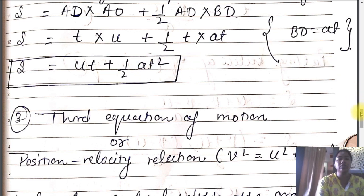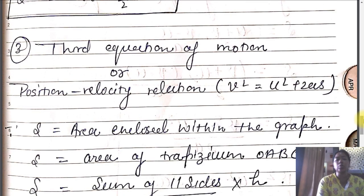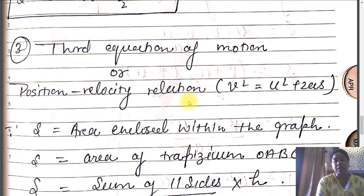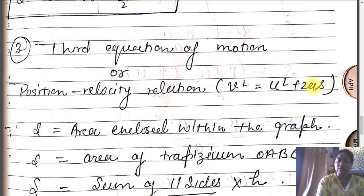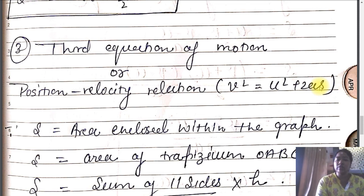Now the third equation of motion, also known as the position-velocity relation. In mathematical form, it is given by V squared equals U squared plus 2aS, where V is the final velocity, U is the initial velocity, a is the acceleration, and S is the displacement or path length. To derive this, we return to our graph.